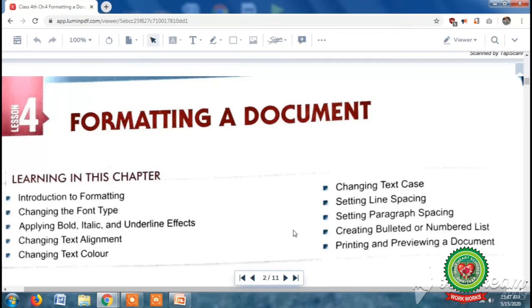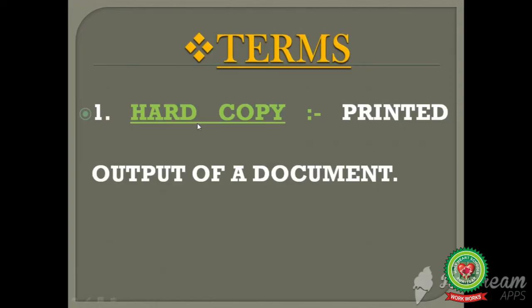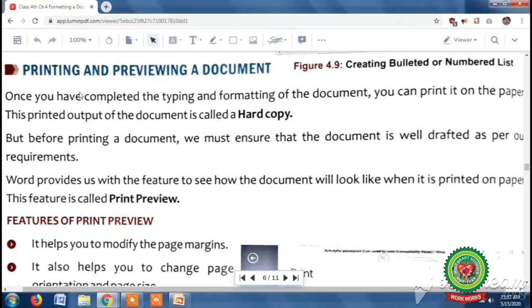Open page number 40. Before starting our topic, we will discuss a term. Our first term is hard copy — the printed output of a document. Students, you can see your computer book and magazines; all these are examples of hard copy which are printed using a colorful printer. On page number 40, our first topic is printing and previewing a document. Once you have completed the typing and formatting of the document, you can print it on paper, and this printed output is called a hard copy.